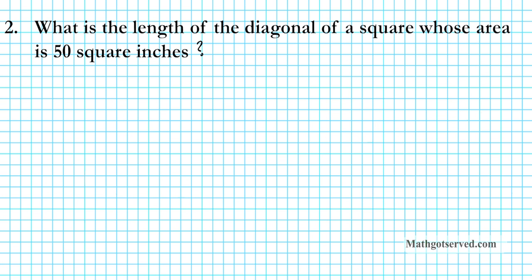Let's take a look at question number 2. It says: what is the length of the diagonal of a square whose area is 50 square inches? Let's start off by drawing the square. The square has 4 congruent sides and 4 congruent angles. Each side is labeled S, and we know the area is 50 square inches.